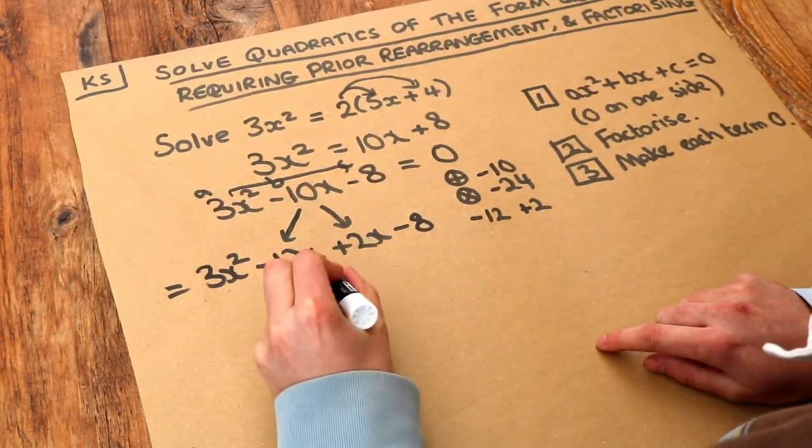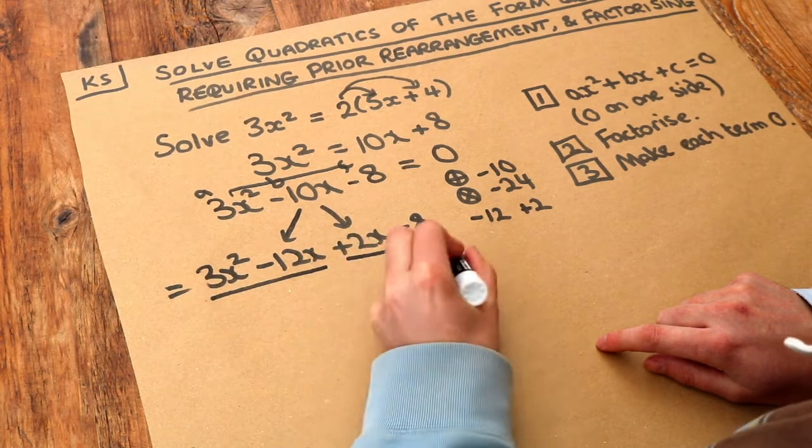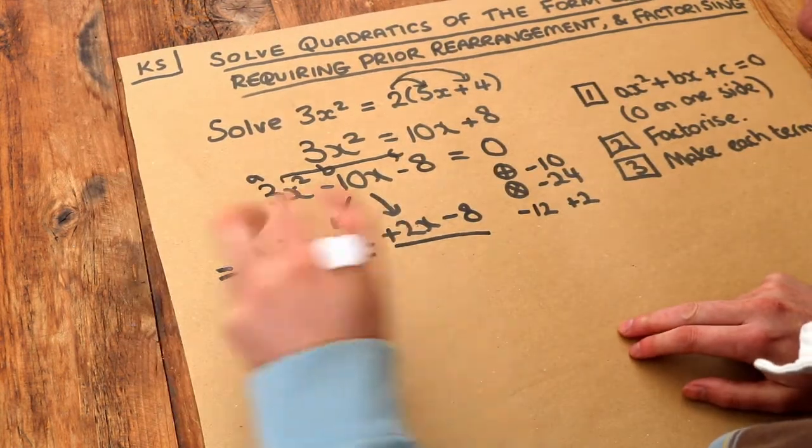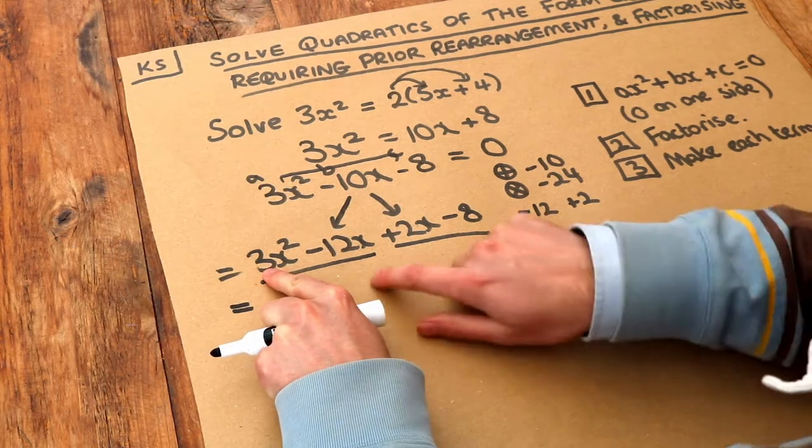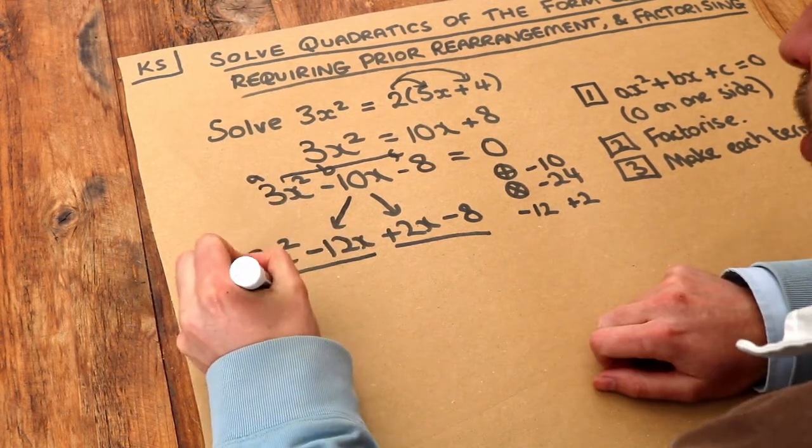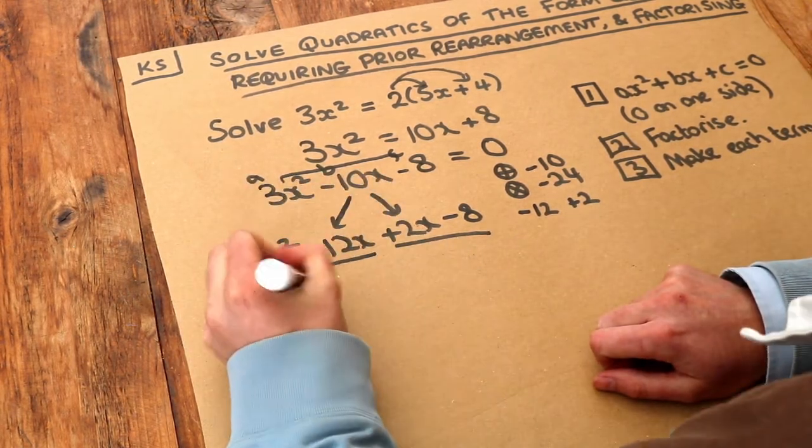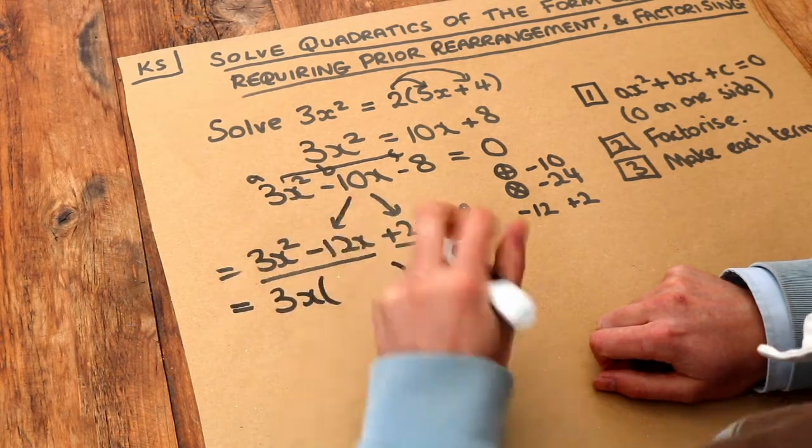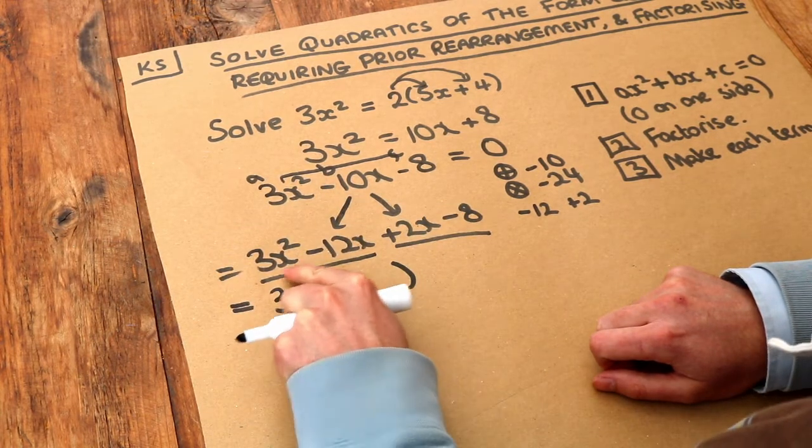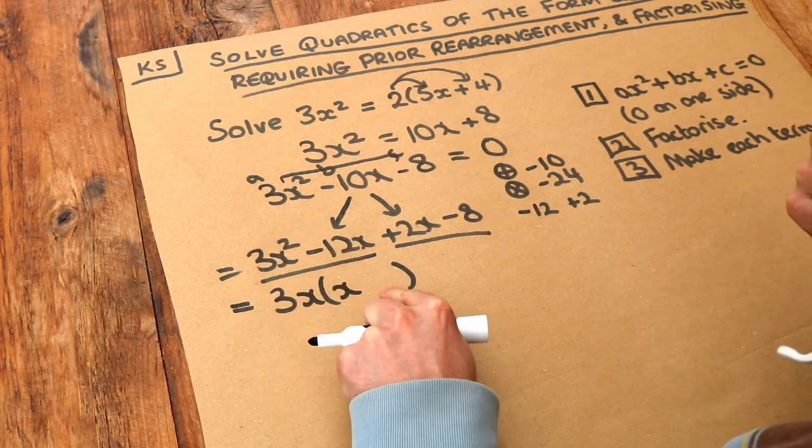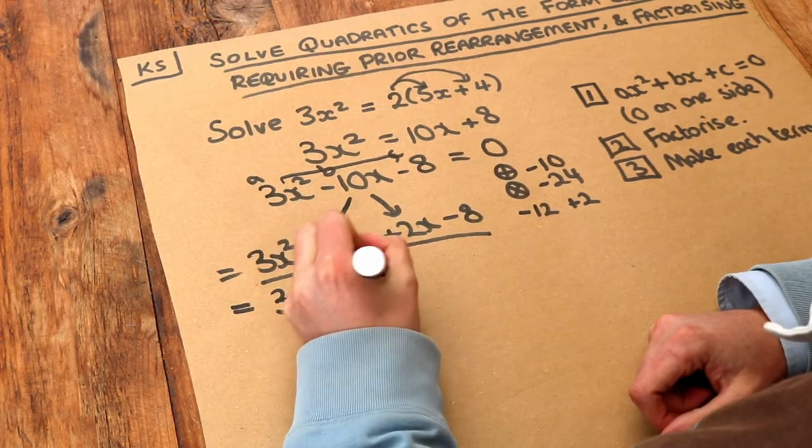And then, do you remember, the next step was to factorize each half. So I underline each half. What's common to this and this? Well, 12 and 3 have 3 in common. X squared and x have an x in common. Then we need a bracket. 3x times what is 3x squared? Well, it's x. 3x times what is minus 12x? Minus 4.